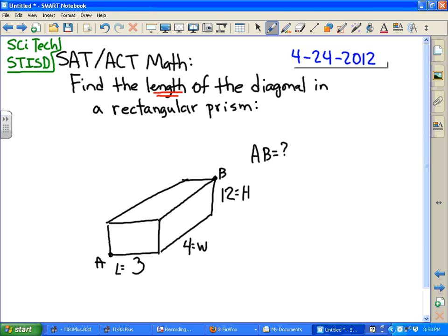In other words, we're interested in going from point A to point B. This is sometimes referred to as the inner diagonal in a rectangular box. And when we have the inner diagonal, we have three dimensions.